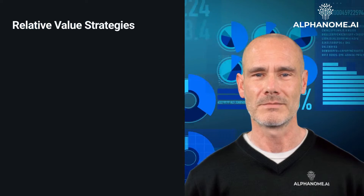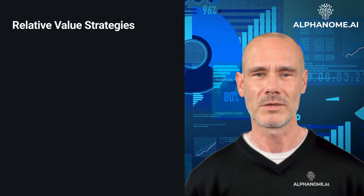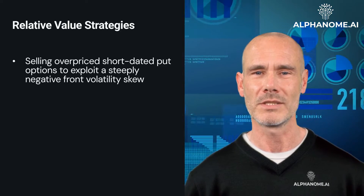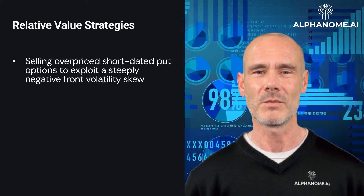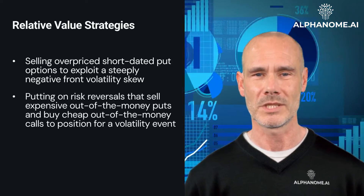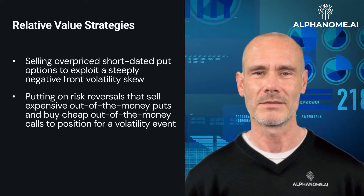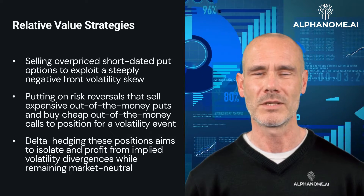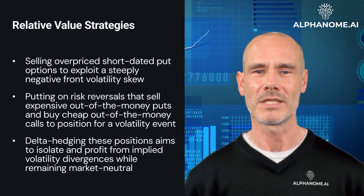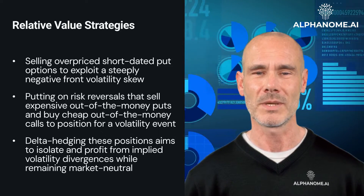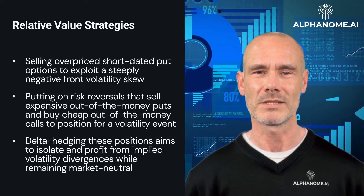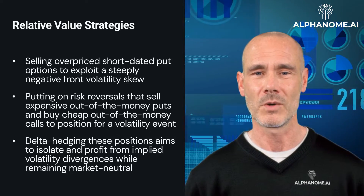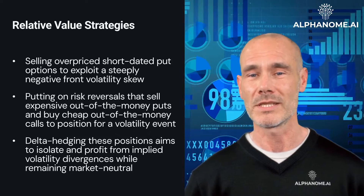Some investors look to identify rich or cheap areas of the volatility surface to execute relative value trades. For example, selling overpriced short-dated put options to exploit a steeply negative front volatility skew, or putting on risk reversals that sell expensive out-of-the-money puts and buy cheap out-of-the-money calls to position for a volatility event. Delta hedging these positions aims to isolate and profit from implied volatility divergences while remaining market neutral. The volatility surface factors heavily into the pricing and risk management of such volatility arbitrage strategies used by hedge funds and market makers.